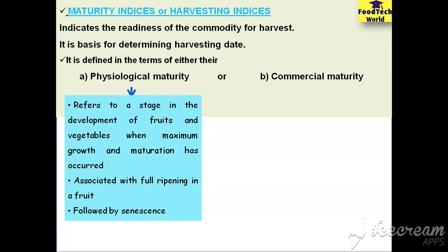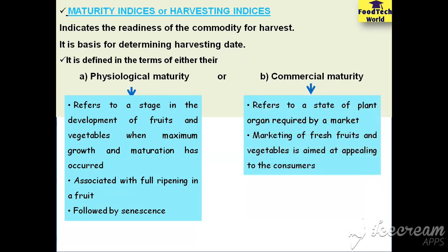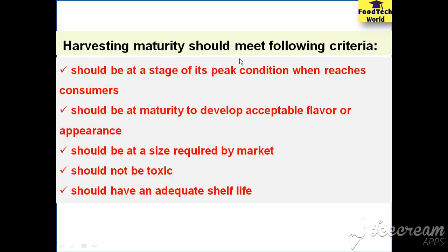In commercial maturity, it means when a plant part possesses the necessary characteristics for use by consumers — it refers to a state of a plant organ required by a market. Harvesting maturity should meet the following criteria: it should be at a state of peak condition when it reaches the consumers; it should be at a maturity stage which allows the commodities to develop acceptable flavor and appearance; it should be at a size required by the market; it should be non-toxic and should have adequate shelf life.